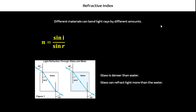Refractive index measures how much your material can refract. For example, when the same light ray has an angle of incidence of 60 degrees, passing through glass, it is refracted by 34.5 degrees; passing through water, it is refracted by 40.6 degrees. For glass, n equals sin 60 divided by sin 34.5, which gives approximately 1.52.